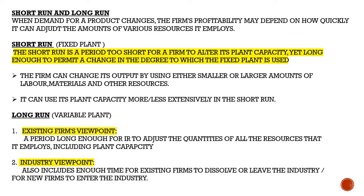In the long run, you have a variable plant — plant capacity or plant size can either increase or decrease. From an existing firm's viewpoint, the long run is a period long enough to adjust quantities of all resources employed, including plant capacity. The industry viewpoint also includes enough time for existing firms to dissolve or leave, and for new firms to enter the industry.